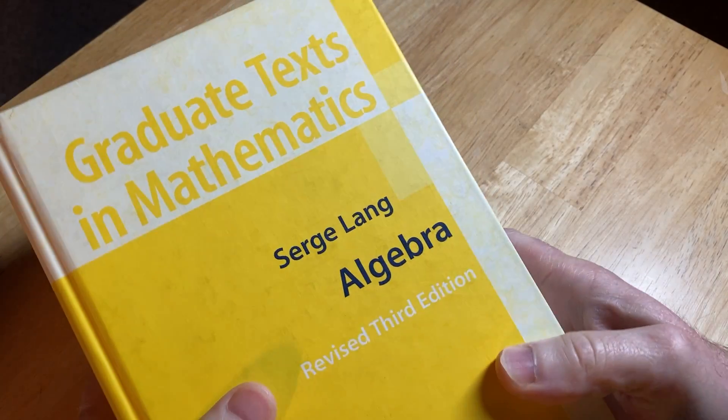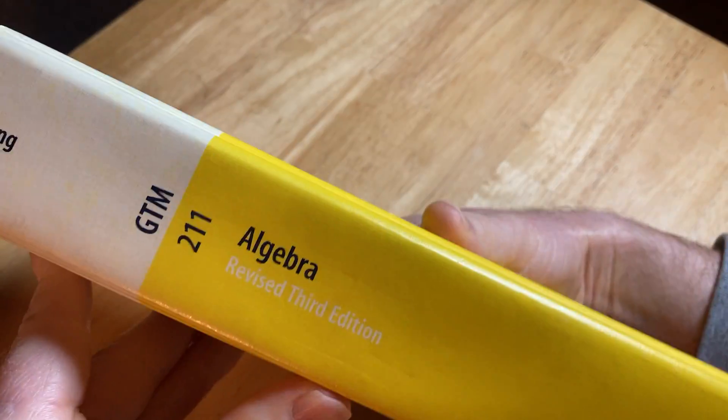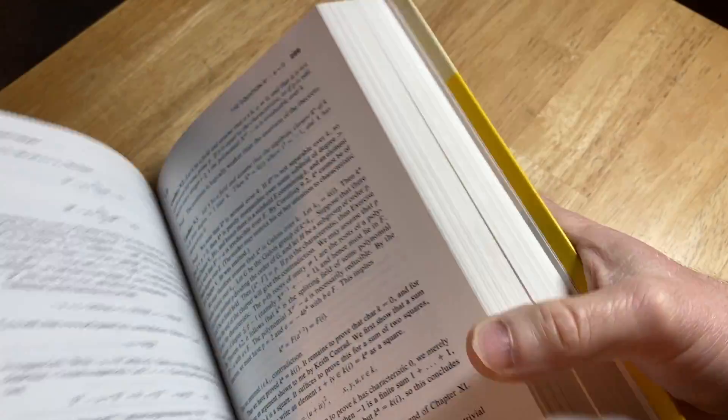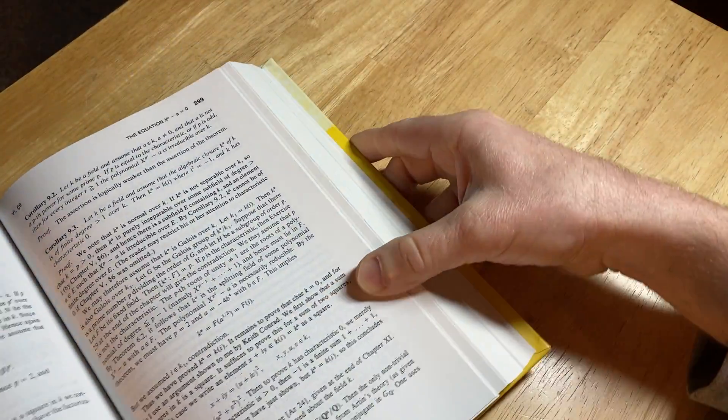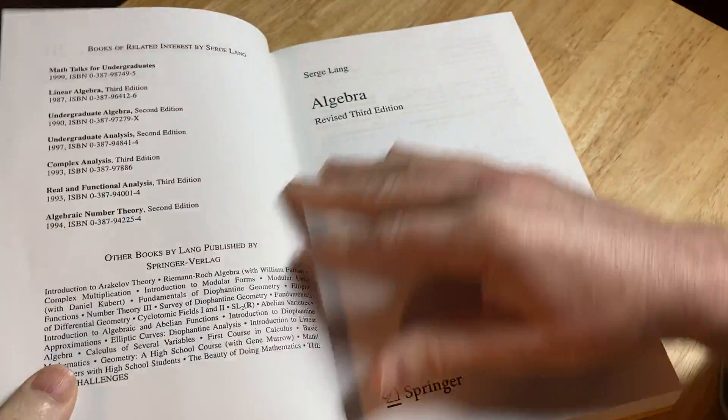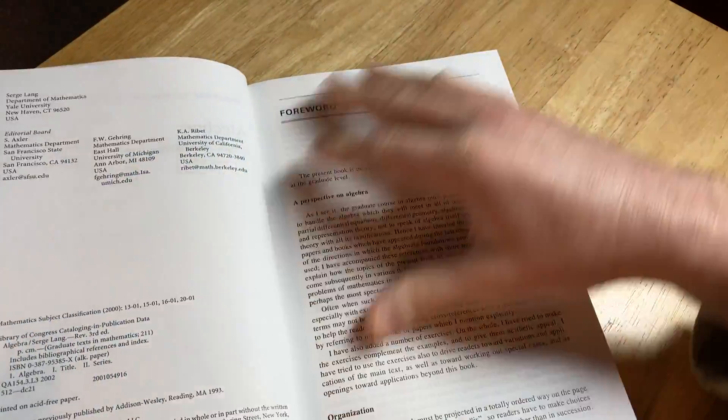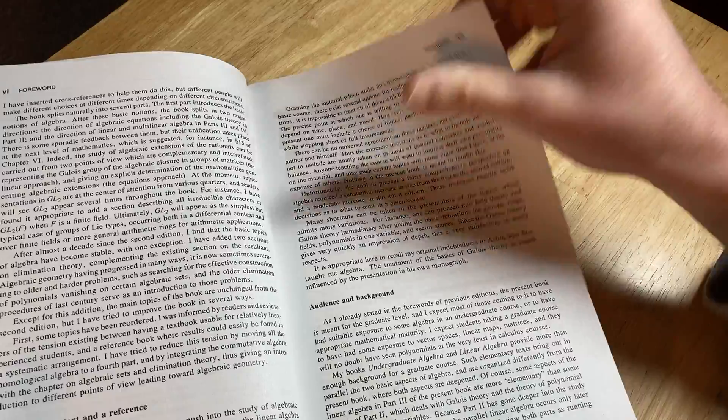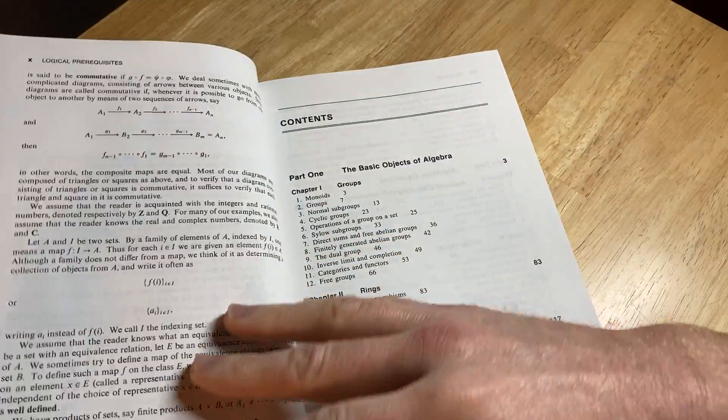This is the revised third edition, graduate texts in mathematics. So one of the few books that I've purchased new. Just amazing, amazing book. So this is Serge Lang's Algebra. It is a masterpiece of a book in some sense because he covers everything so quickly.